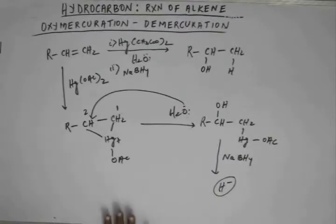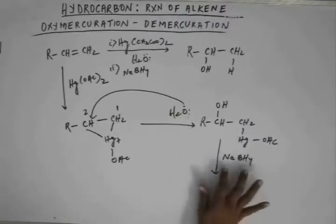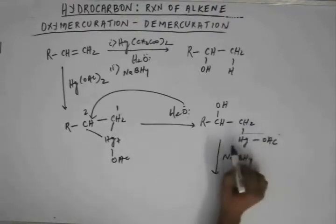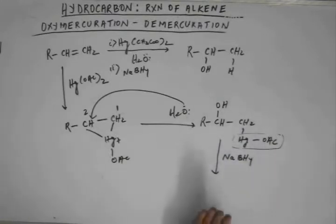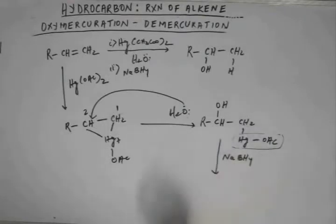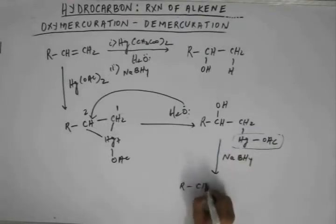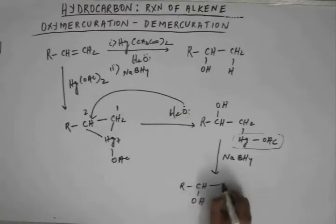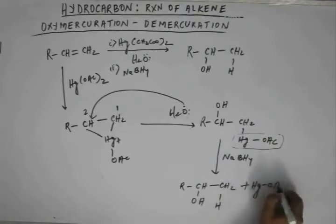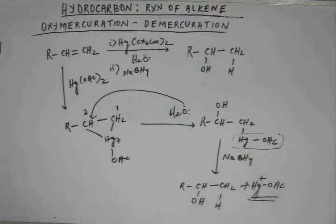We will study sodium borohydride and lithium aluminum hydride in detail in the chapter on carbonyl compounds. For now, it is sufficient to know that sodium borohydride is a hydride generator. Once it has generated hydride, that hydride can show an SN2 reaction — a backside attack on this carbon — and get attached to this carbon, throwing out this mercuric acetate part.